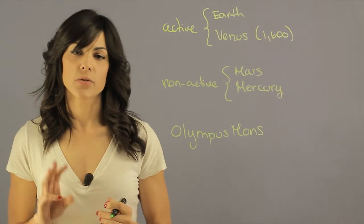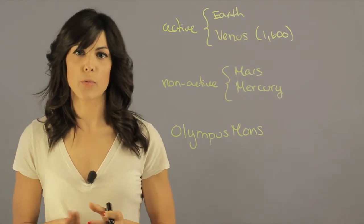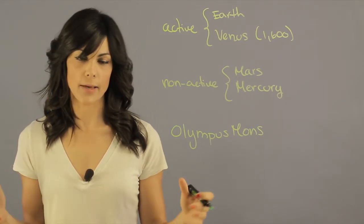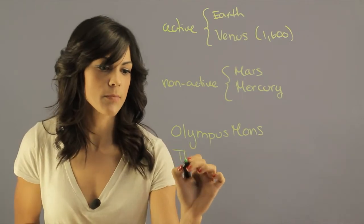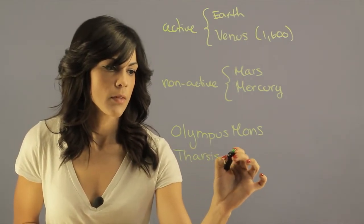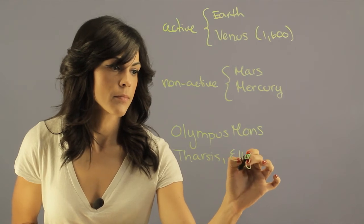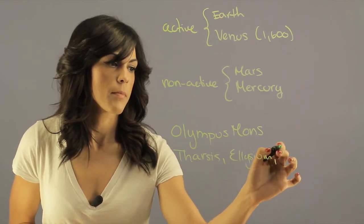And Mars actually has three regions that are famously known for volcanic landforms, and they are Tharsis, Elysium, and Hellas.